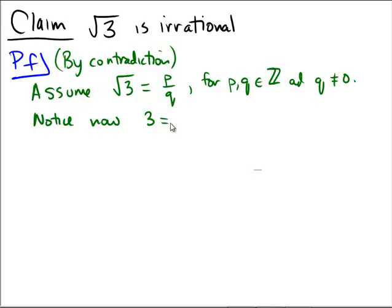Which in turn would imply, if we multiply both sides by q squared, 3q squared equals p squared.